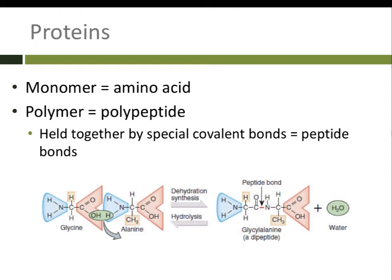To join amino acids, we use the same type of reaction: we put two monomers next to one another, remove a water molecule, causing a bond between the carbon and the nitrogen. In the case of proteins, this bond has a special name — it's called a peptide bond. It's still a covalent bond, but with its own special name. We can add amino acids together through dehydration synthesis, and break the peptide bond by adding water back in through hydrolysis.